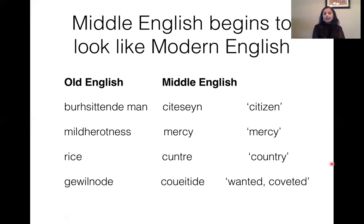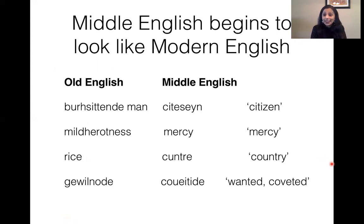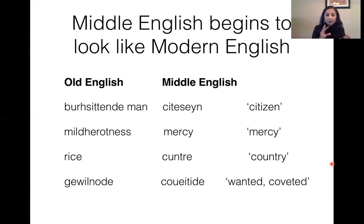This was also the era when Middle English started to look a lot more like Modern English. Here are some words in Old English with corresponding Middle English versions and Modern English translations. Old English and Middle English look completely like two different languages — they don't look like the same language at a different stage. But if you look at Middle English and Modern English, the spelling is very similar: citizen, mercy, country, coveted. The Old English versions look very different.